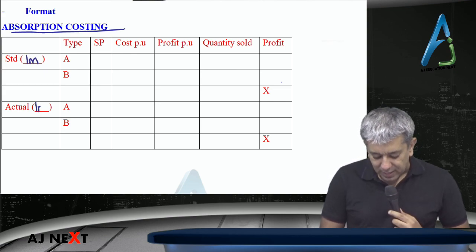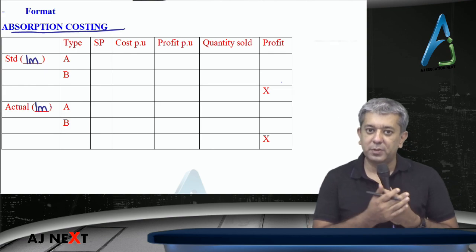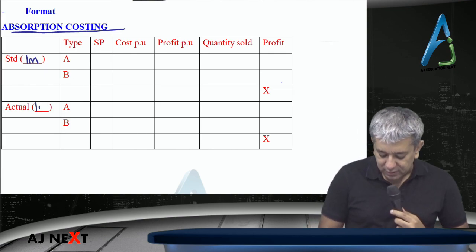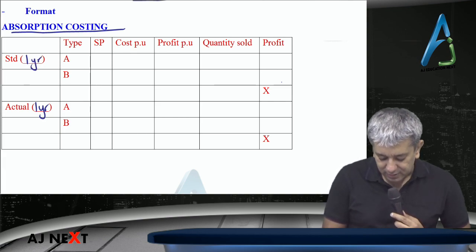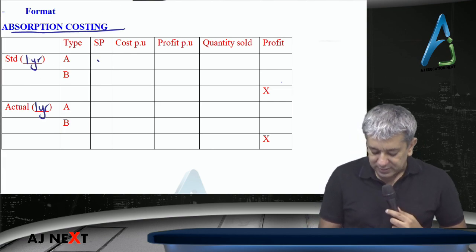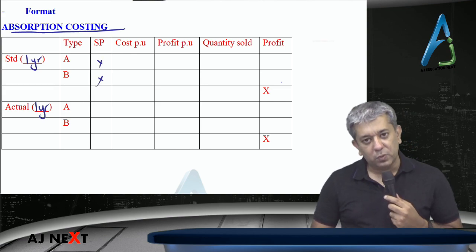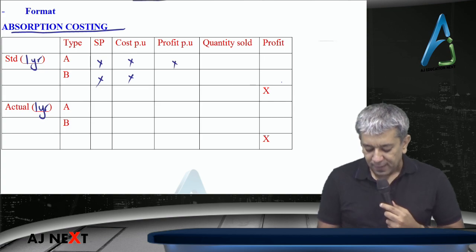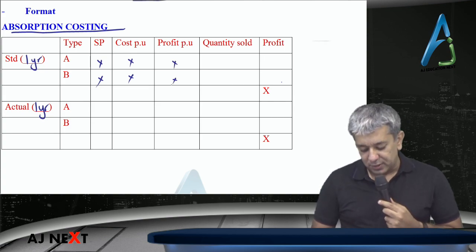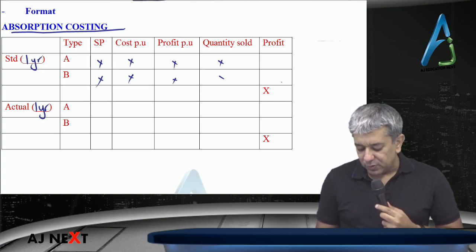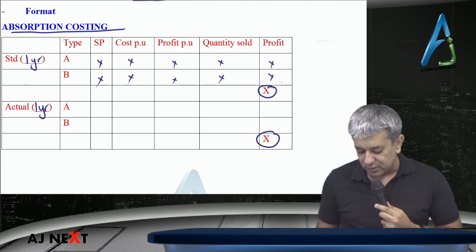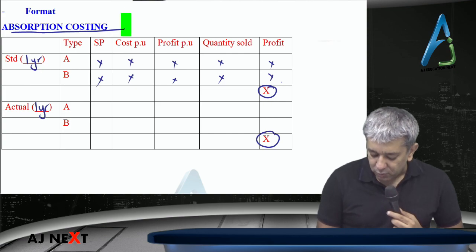Suppose standard data is for one month and actual data is for one month, then they will be taken together. If actual data is for one year, then standard data must also be for one year — remember that. Your product's selling price — what it should have been, cost per unit — what it should have been, and profit per unit — how much should have been earned and how many units should have been sold.